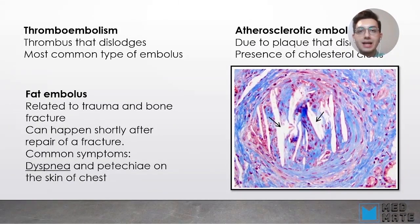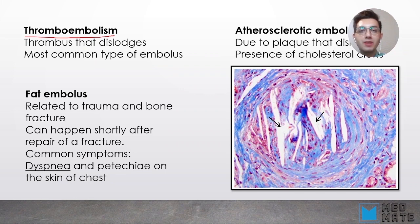We have different types of embolism. We have thromboembolism, which is basically a thrombus that has dislodged and is now moving to different sites in our body. The most common type of embolism is thromboembolism.